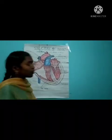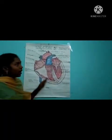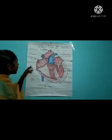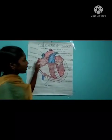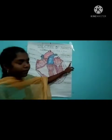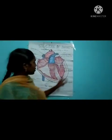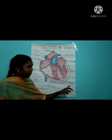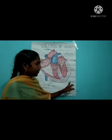The heart has four chambers. The first one is the right atrium and the second one is the left atrium. The third one is the right ventricle and the fourth one is the left ventricle.